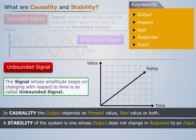The signal whose amplitude keeps on changing with respect to time is called unbounded signal. Example: ramp signal.